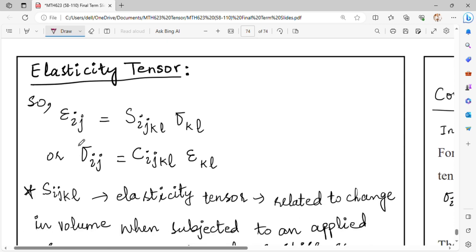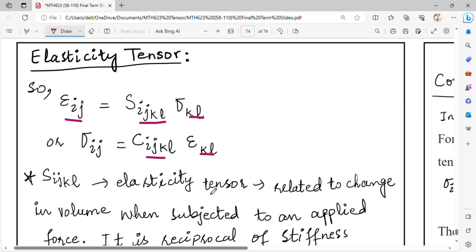For the elasticity tensor, we write epsilon_ij equals S_ijkl sigma_kl, or sigma_ij equals C_ijkl epsilon_kl. Both stress and strain are second-rank tensors with lower indices. To relate them, we use a fourth-rank tensor S_ijkl, where the components come from indices i, j, k, l. This elasticity tensor is related to change in volume.